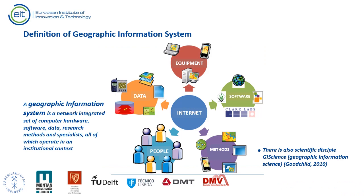Based on the information presented so far, we can now define what geographic information systems are. We may think of GIS as software installed on a desktop computer used to solve a given spatial problem, such as identifying an optimal location for an activity. However, the appropriate way is to think of a geographic information system in a broader sense as an integrated set of computer hardware, software, data, research methods, and specialists, all of which operate in an institutional context.